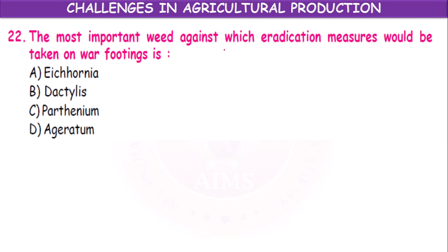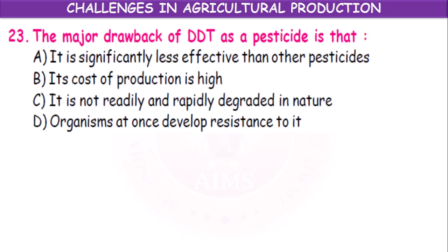The most important weed against which eradication measures would be taken on war footing is Parthenium. A pesticide that is significantly less effective than others, has a high cost of production, is not readily and rapidly degraded in nature, and causes organisms to develop resistance — such a pesticide can lead to biomagnification and be transferred from one organism to another through the food chain.